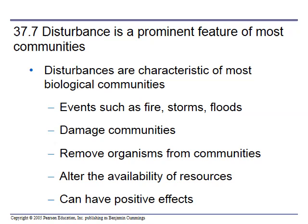Disturbance is a prominent feature of most communities. A disturbance can be as simple as a tree falling in the forest and opening up light for new shrubs, or as big as fire, storms, floods, and volcanoes. It damages a community, removes organisms, and alters the availability of resources. We usually think of disturbances as negative, but it opens up different resources — and nature has evolved this way. It can have positive effects.